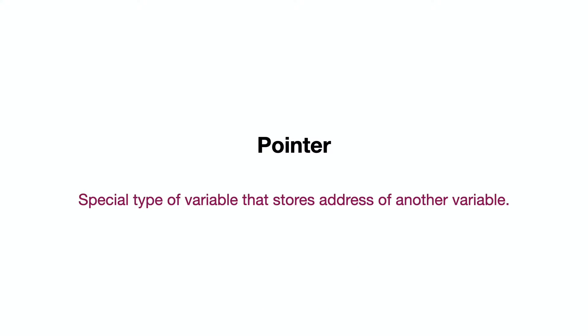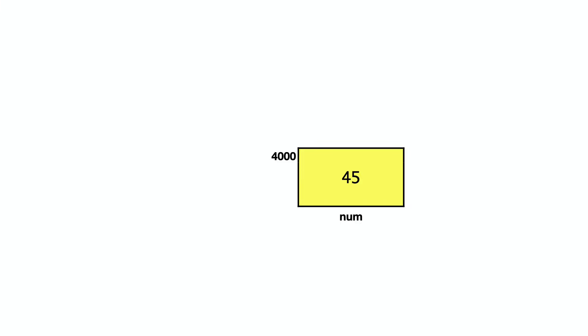Let's see a visual explanation. We represent a variable as a rectangle — the rectangle represents the allocated memory block, the name of the variable is written outside, and the address is on the left side, say 1000. The value stored inside is 45. A pointer variable is represented as a circle.